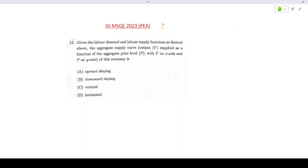Hello everyone, welcoming you to Shore of Source Classes. Today we are looking at the ISI MSQE 2023 PEA paper, question number 13. Given the labor demand and labor supply functions as derived above, the aggregate supply curve output Y supplied as a function of aggregate level price P, with Y on the x-axis and P on the y-axis of the economy, is given by which of the shapes?